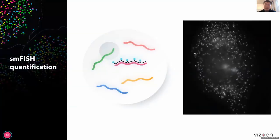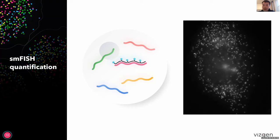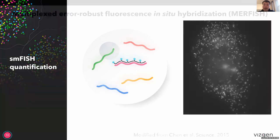MERFISH stands for Multiplexed Error-Robust Fluorescence In Situ Hybridization. This is based on a traditional technology called single-molecule FISH, or SMFISH, where fluorescence-tagged oligoprobes are used to label different RNA species. By counting the fluorescent dots, you get a sense of how different genes are expressed inside a cell at subcellular resolution. SMFISH is very well known for its sensitivity, but its multiplexing level is limited — often less than four different RNA species can be imaged simultaneously.